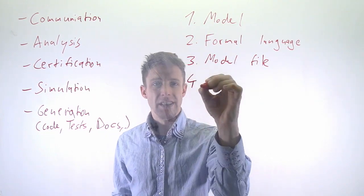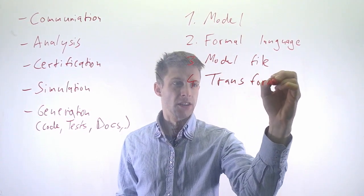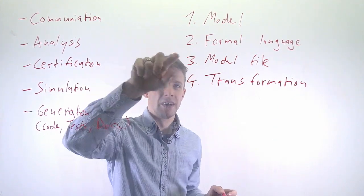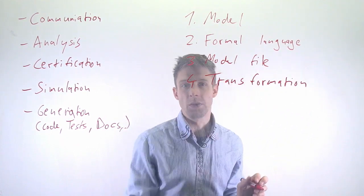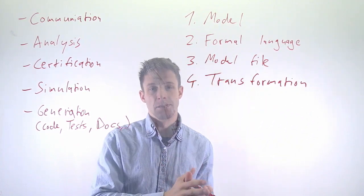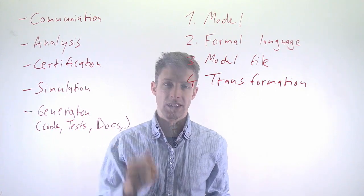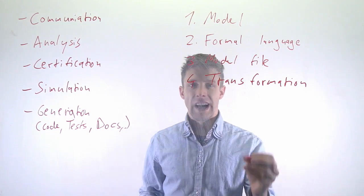And then finally, we need something that is called a transformation, a model transformation. So what we do is we read in our model, we know what the language is so we somehow understand it, and we have some kind of program that takes the model and transforms it, for example, into running system code or into a markdown or HTML file that is used for documentation.